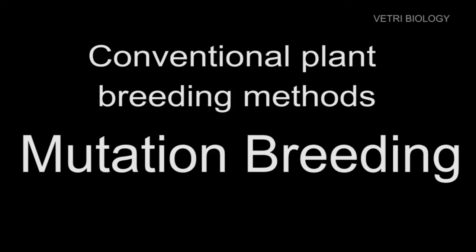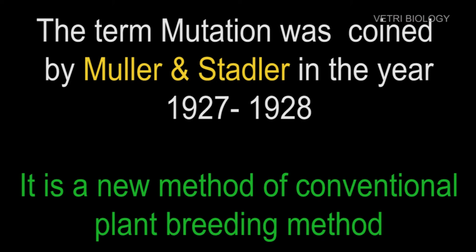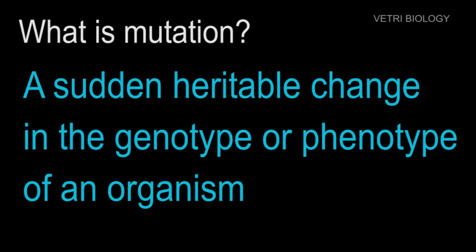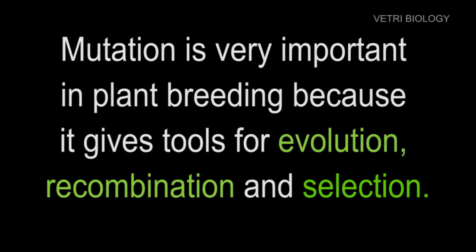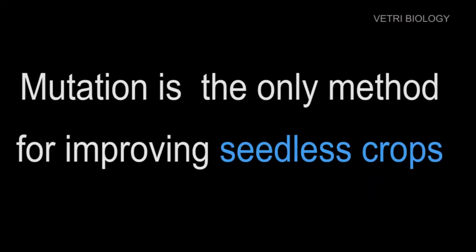The next type of conventional breeding is mutation breeding. The term mutation was coined by Muller and Stadler in the years 1927 to 1928. It is a new method of conventional breeding. A sudden heritable change in the genotype or phenotype of an organism is called mutation. This mutation is very important in plant breeding, and it is the only method for improving seedless crops.